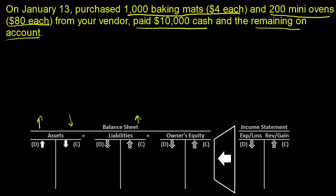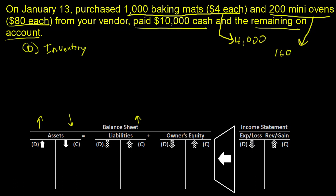What's happening to inventory? We are getting inventory, so it's going to be a debit. We're going to debit inventory. We could have two entries: inventory for baking mats — $4 each times 1,000 is $4,000. And 200 mini ovens at $80 each as its own entry — 200 times 80 gets to $16,000. Or you could combine it all and just call it inventory $20,000. Either way of doing this is totally fine.